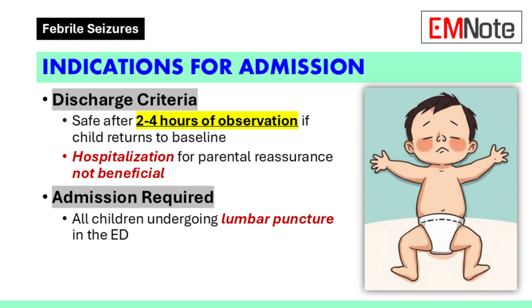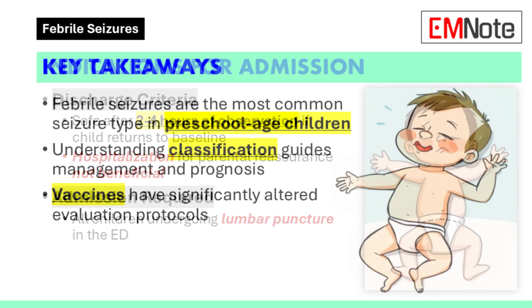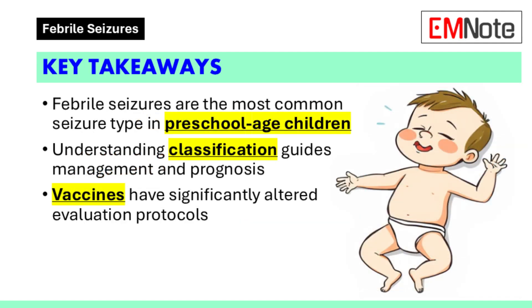Most children with febrile seizures do not require hospital admission. Discharge is safe after a period of observation if the child returns to their neurologic baseline, typically 2 to 4 hours or potentially longer in specific situations. Hospitalization solely for parental reassurance is not beneficial. All children undergoing lumbar puncture in the emergency department should be admitted. Febrile seizures are the most common type of seizure in preschool-age children, and understanding their classification guides management and prognosis. The introduction of vaccines against Haemophilus influenzae type B and Streptococcus pneumoniae has significantly altered the evaluation needed for children with febrile seizures.